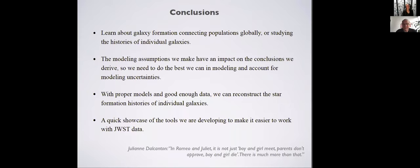Gustavo asks: were all the people in the code comparison using the same stellar population synthesis models? Camille answers: the majority were using her models, but not all of them. That is definitely a systematic to account for. For the median plot of SFR versus stellar mass, she removed the one run with GALAXIES for being systematically offset from the others that were more similar, but it can be a source of systematic uncertainty.